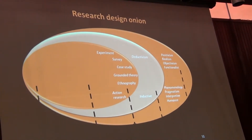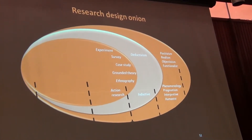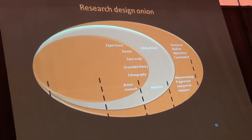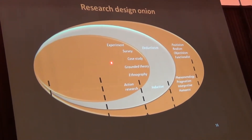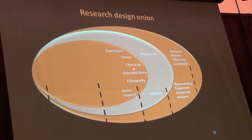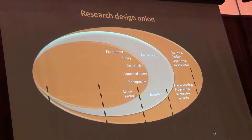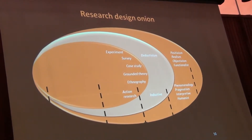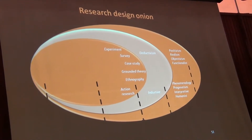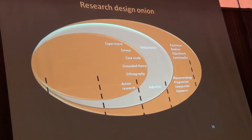Then the next layer of the onion is: what possible strategies can I use? How can I do this? Some of them, but not all of them, are the following: you could do experiments — experimental design — surveys, case studies, grounded theory, ethnography, action research, and many more. So we're drilling from the outside deeper and deeper into where we're going to find the answer.